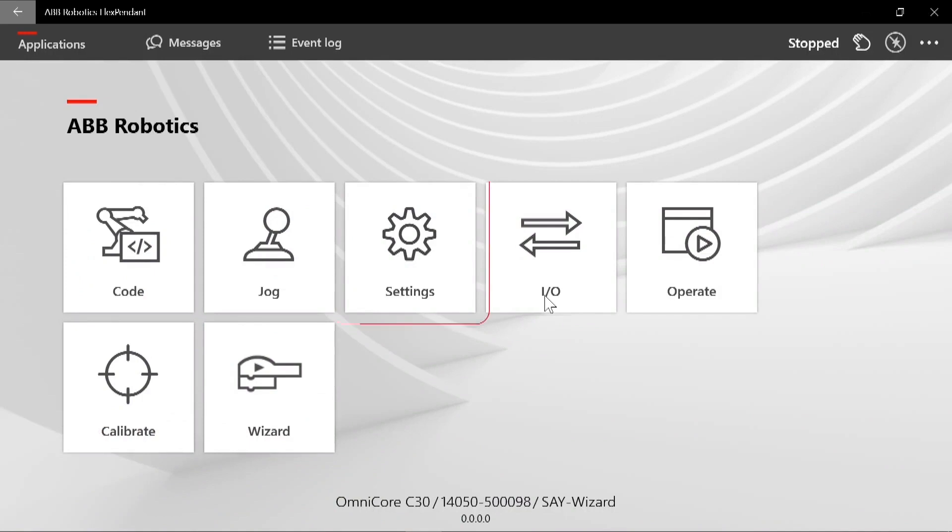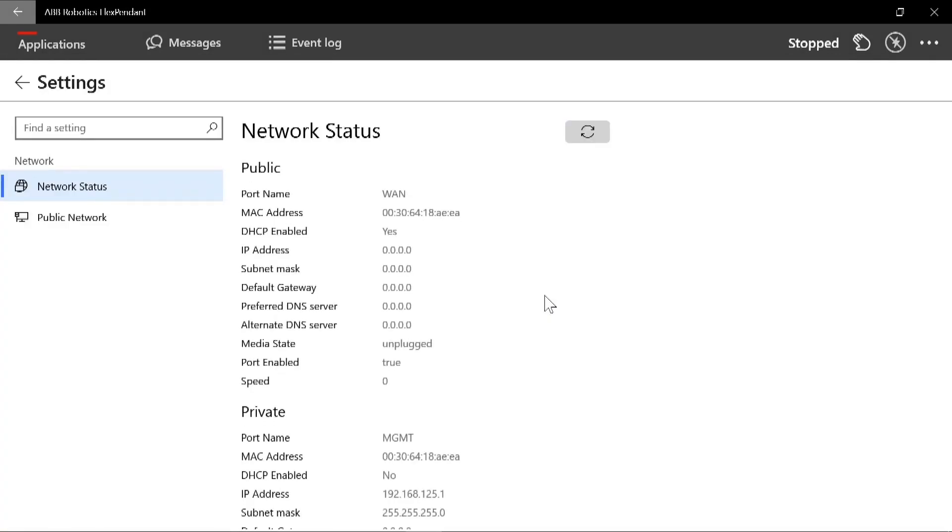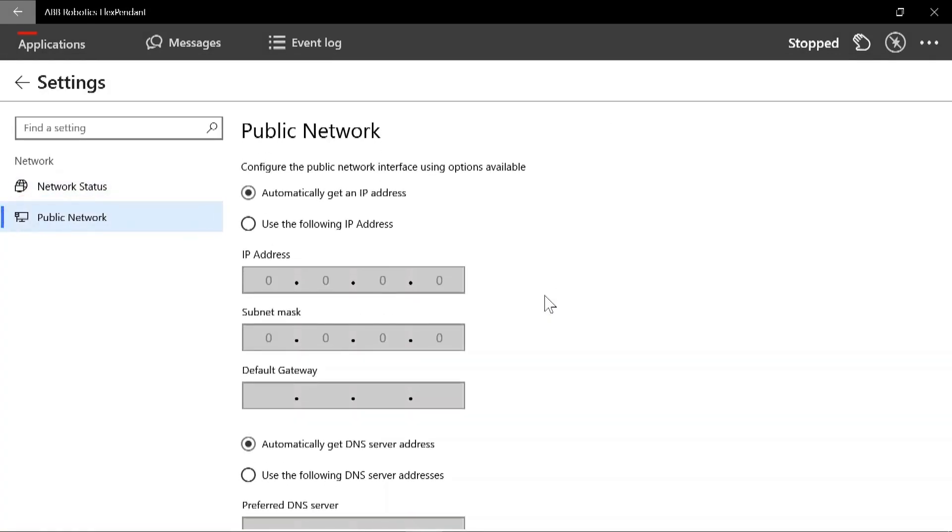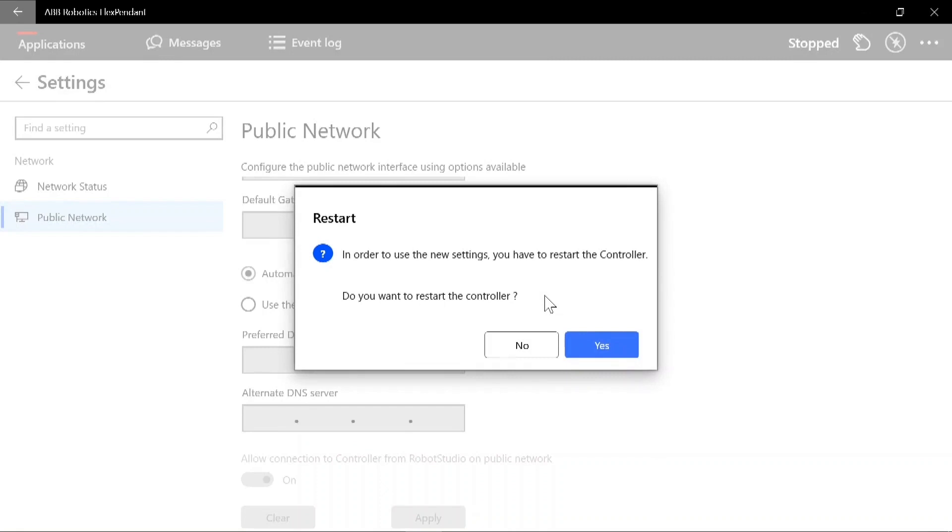On the flex pendant, click settings and then click network. Click the public network and scroll down. Here you can allow connection to controller from Robot Studio on public network. Please note, this setting is only enabled in manual mode. Click apply and then restart the controller.